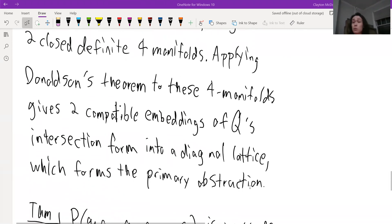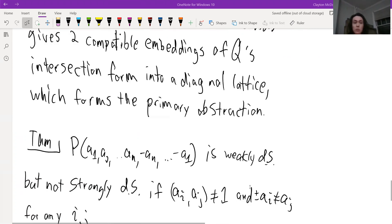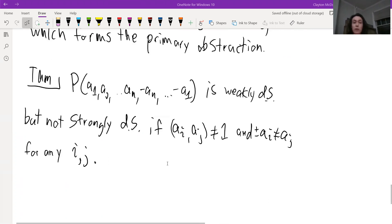And this is going to be the primary obstruction to being strongly doubly slice. So in particular, we have this family of pretzel links. We can go A1 to AN, and then the negations in the opposite order minus AN to minus A1. We know that this is weakly doubly slice by the construction we had, but we know that it's actually not strongly doubly slice if these Ai are not relatively prime.